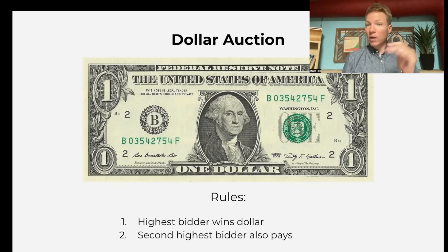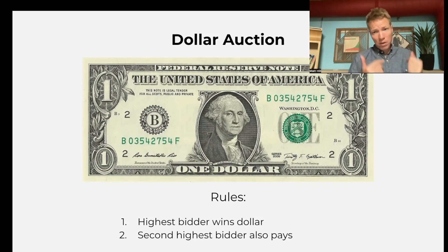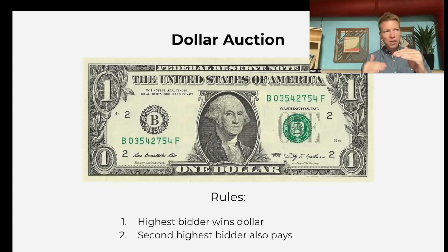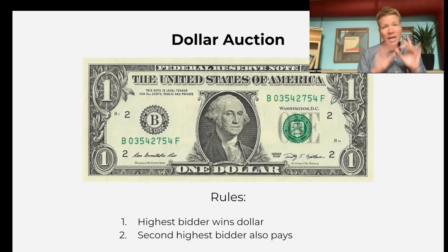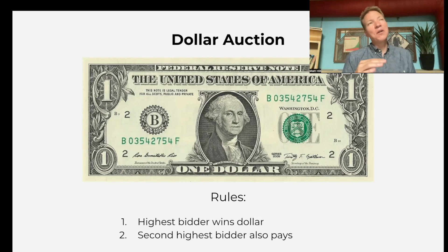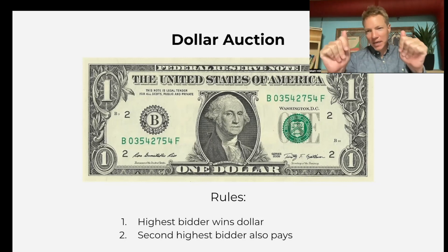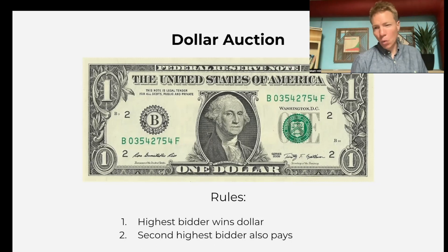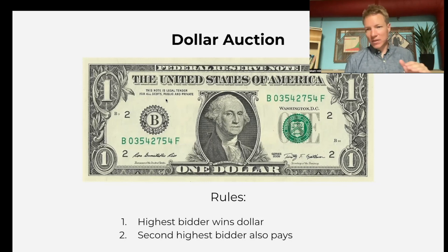They'll usually bump it up at that point. Then you go to the 95-cent person: you're about to lose 95 cents. If you go to a dollar five, you'll pay me a dollar five but you'll get a dollar — you only lose five cents — and they'll usually come over the top. So all of a sudden they realize, 'I better win this dollar,' and it escalates and escalates. I've had it go up to like $20. I never actually collect the money from the students, but it usually does escalate.